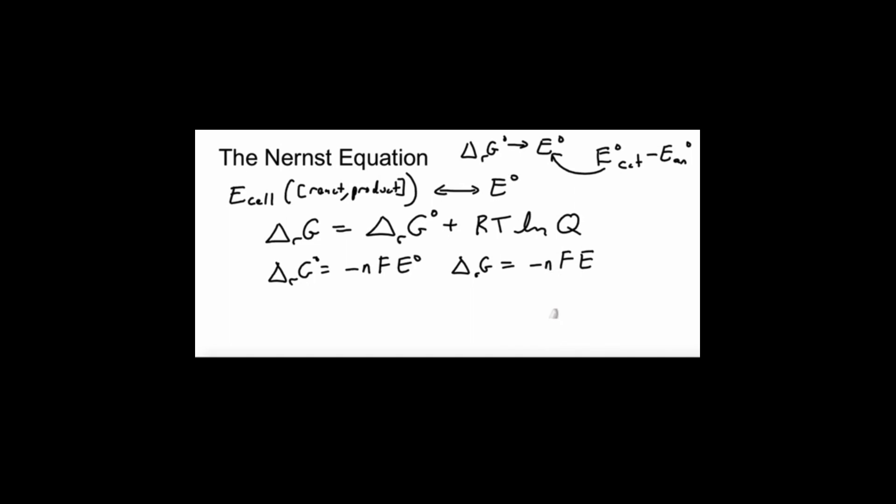So once we have this, we can just make these substitutions and rewrite this equation in terms of voltages. So negative NFE is equal to negative NFE standard plus RT log of Q and then we can just divide both sides by negative NF. We get E is equal to E standard minus RT over NF log of Q. So let's use this. This is the Nernst equation and let's use it to calculate the potential of a cell.